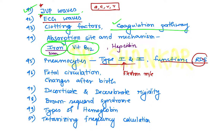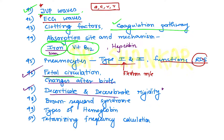Fetal circulation is an important topic, and changes after birth — changes in fetal circulation after birth. Then decorticate and decerebrate rigidity are important topics. Another very important topic is Brown-Séquard syndrome — the role of hemi-transection of the spinal cord and which tracts are affected ipsilaterally and contralaterally.